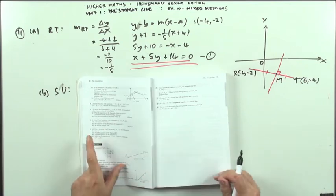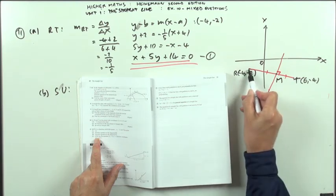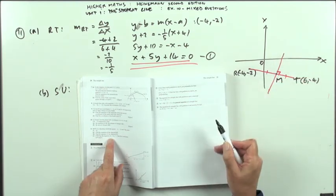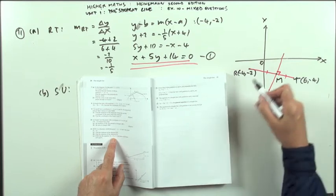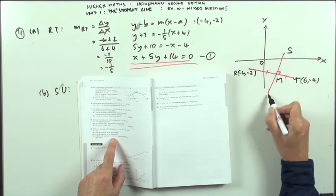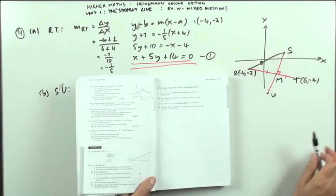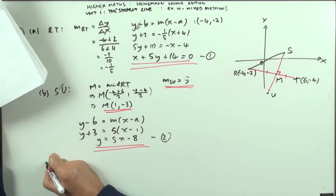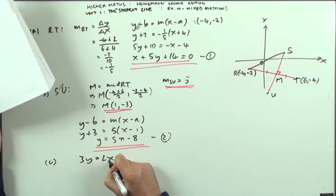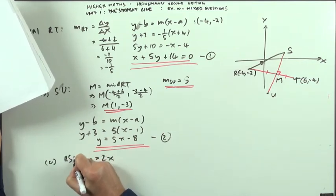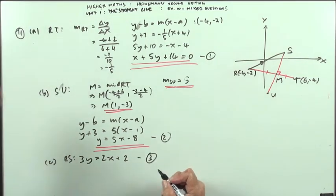Now, last part, part C. R S has the equation, so R going to the point S, whichever it is, has this equation 3Y equals 2X. Now 3Y equals 2X has got a positive gradient, Y equals 2 thirds, so it must be going up. So that must be the point S, and that must be the point U. So it's given me this line here, R S. So for part C, it's got R S has equation 3Y equals 2X plus 2. Call that number 3.